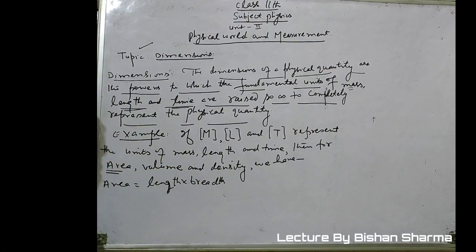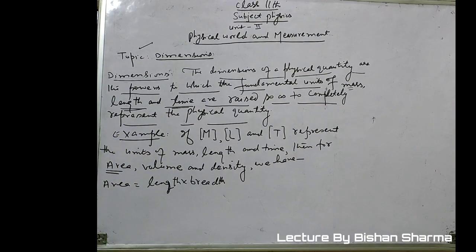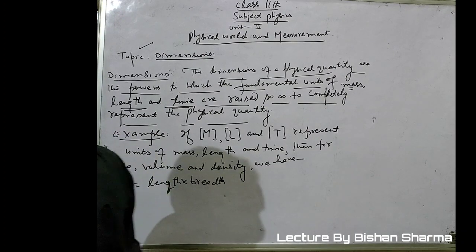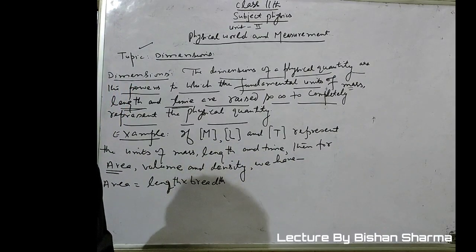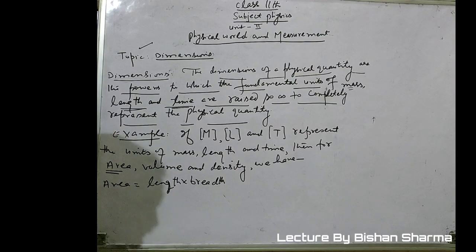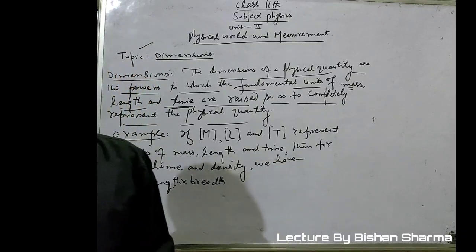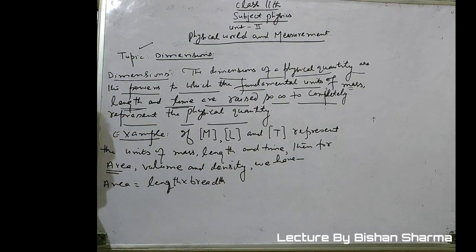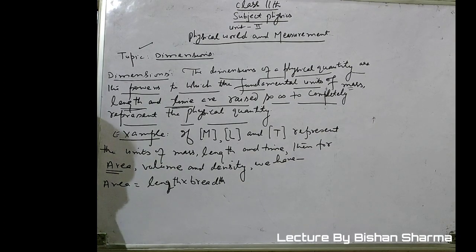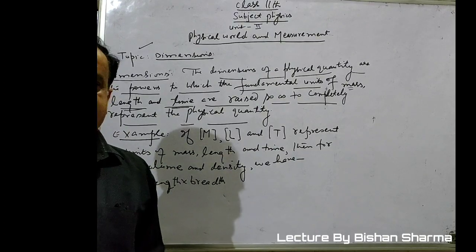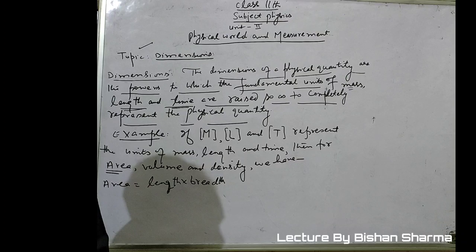In physics, all the distances are taken as length. The height of a room is taken as length. The length of a room is also taken as length, because in physics, length means the distance between two points. Even our radius — which is the distance from the center of a circle to the perimeter — is also a distance, so it will also be taken as length.